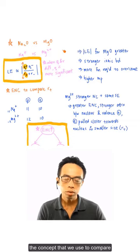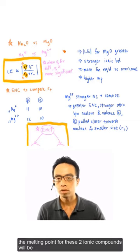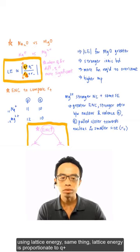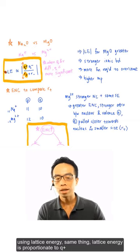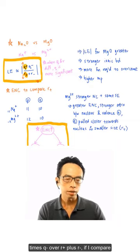The concept that we use to compare the melting point for these two ionic compounds is lattice energy. Lattice energy is proportional to Q+ times Q- over R+ plus R-.